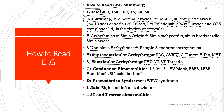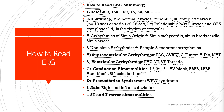We have to see if there are any conduction abnormalities present or not. The patient can have first degree, second degree, or third degree AV block, right or left bundle branch block, hemi block, or bifascicular block. We also look for pre-excitation syndrome such as WPW syndrome. Next, we look at axis — the patient can have right axis or left axis deviation. Then we look for any ST or T wave abnormalities.